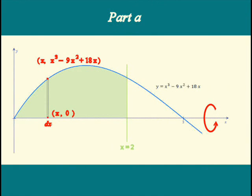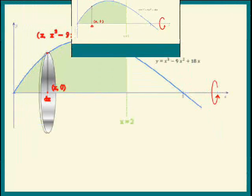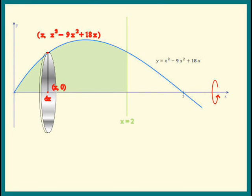Part A says revolve the region about the x-axis. So when this vertical strip goes around the x-axis, we get a disk. The volume of this disk is pi radius squared times its thickness. What's the radius? It's just the big y-coordinate, right? So it's the polynomial.